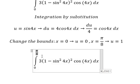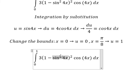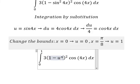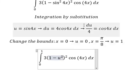So this one will change to number 1, this one will change to u, and cosine 4x dx will change to du over number 4.